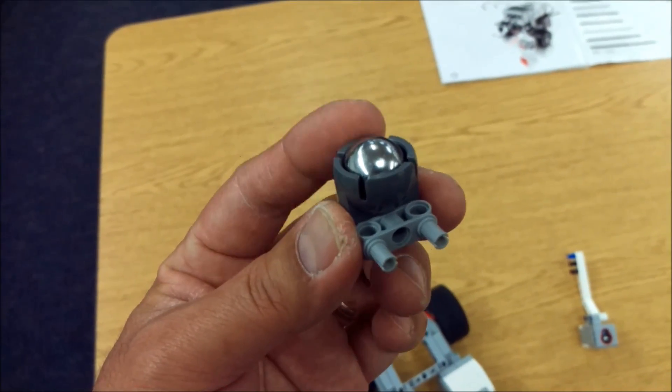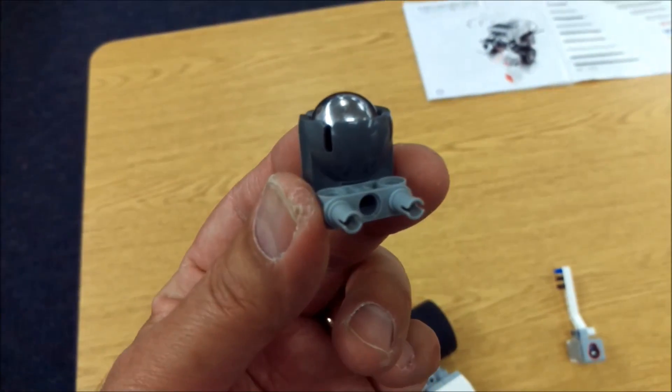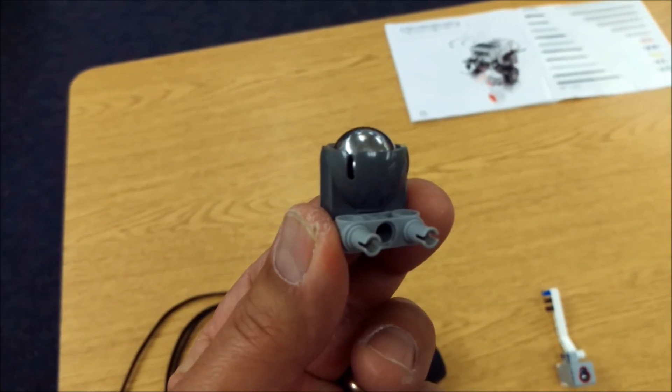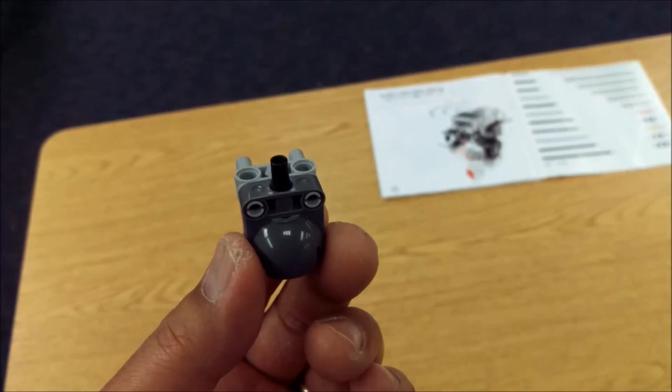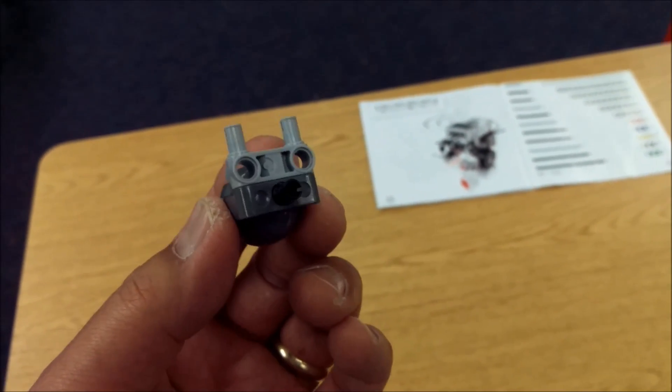So you're going to take your ball and caster and place your last H gray piece into the side like that. And you're going to take a black connector piece.